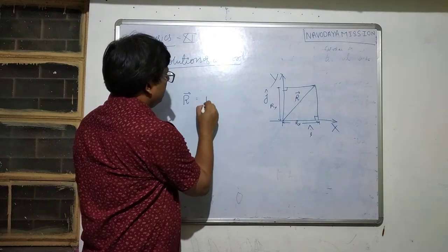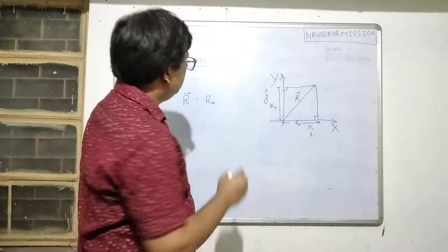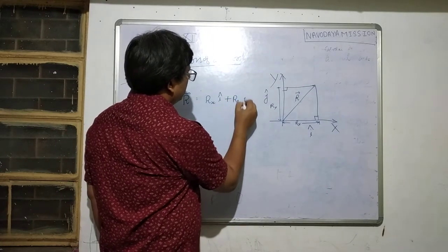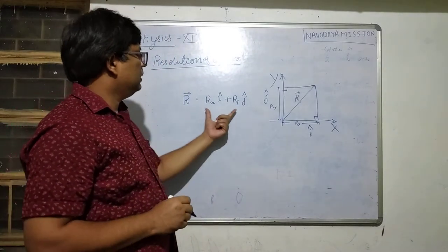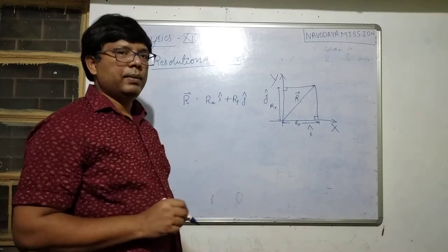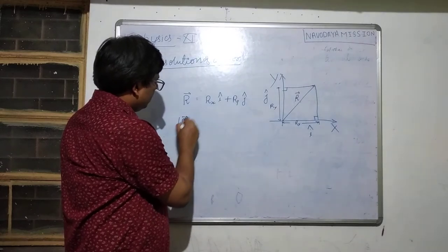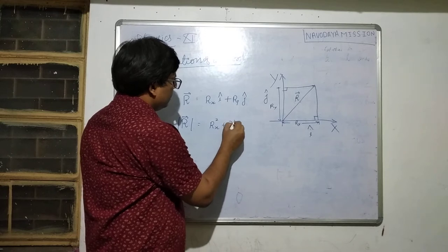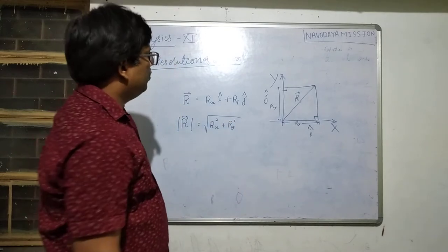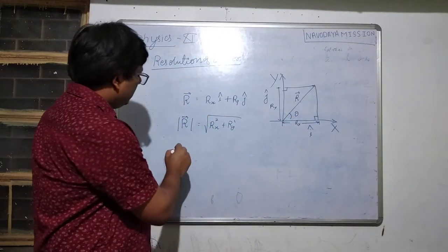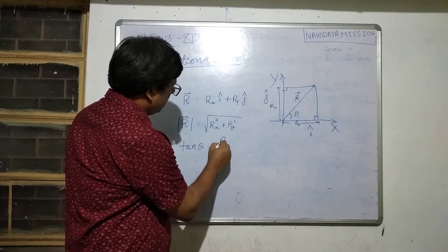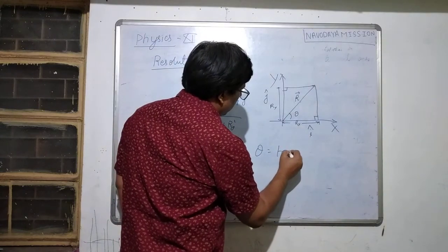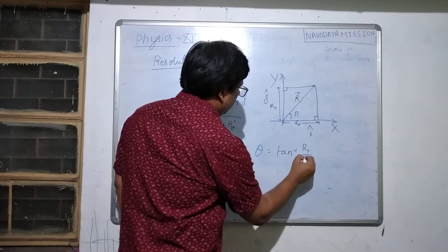R vector can be written as Rx·i-cap plus Ry·j-cap. The magnitude of R vector is the square root of Rx² plus Ry². The angle theta satisfies tan θ = Ry / Rx, so theta equals tan⁻¹(Ry / Rx).